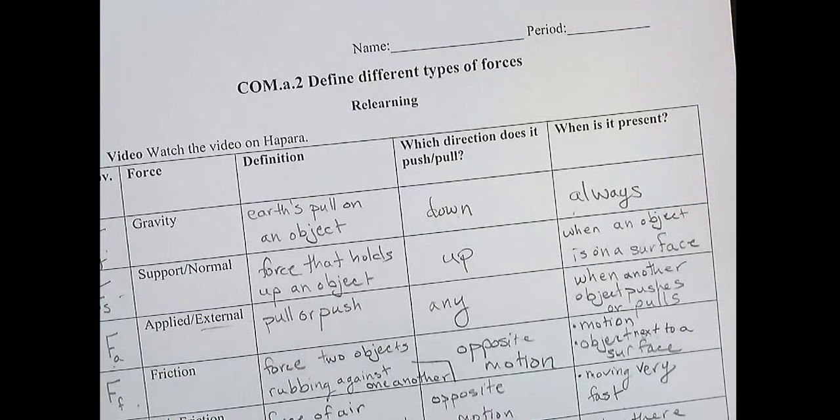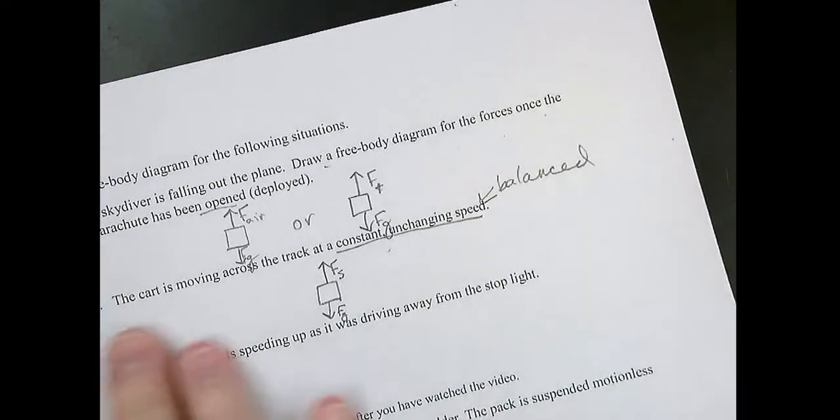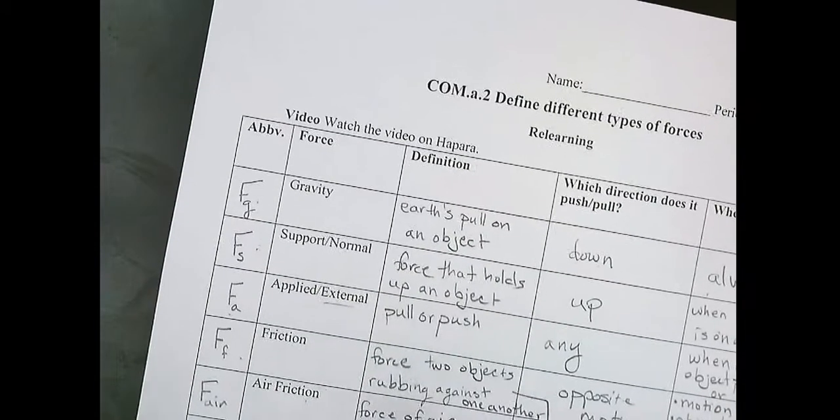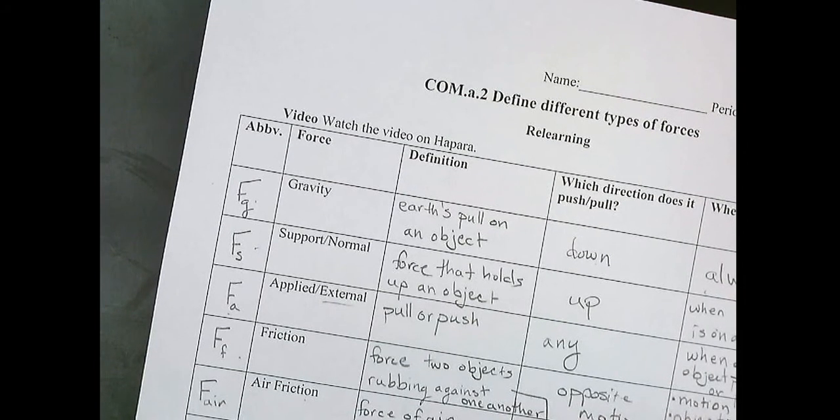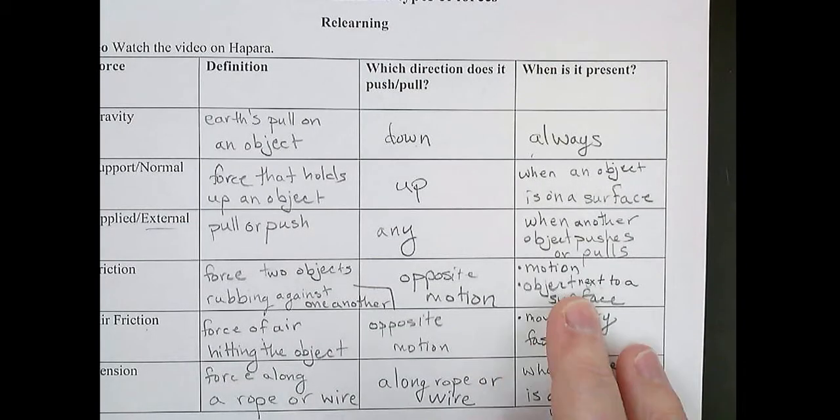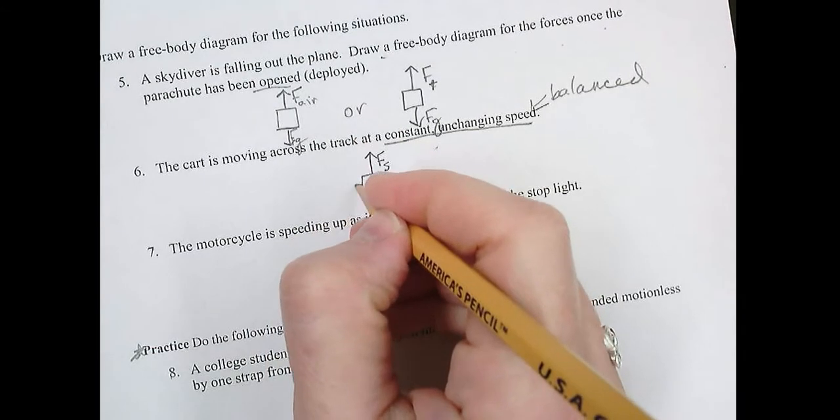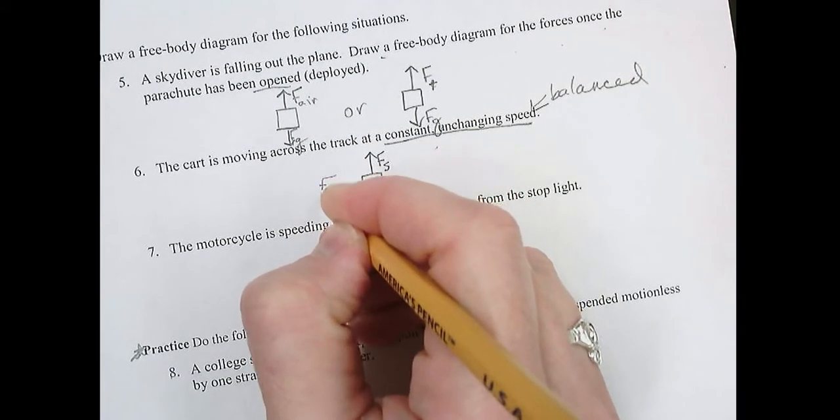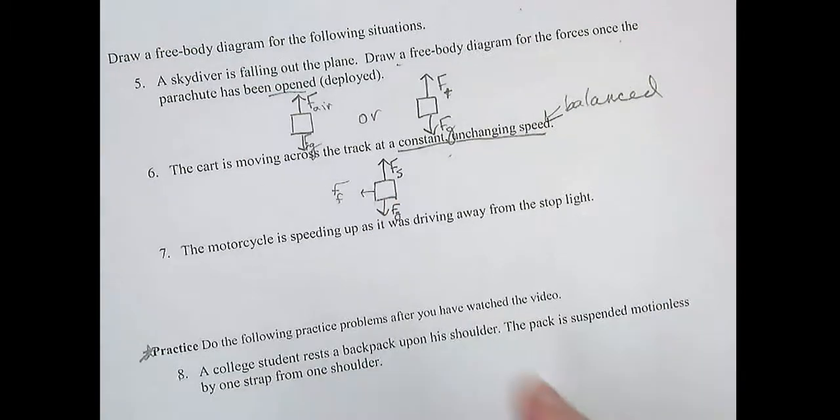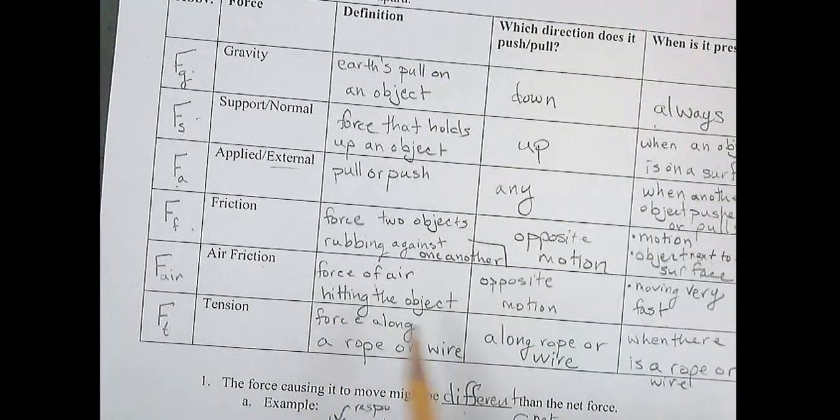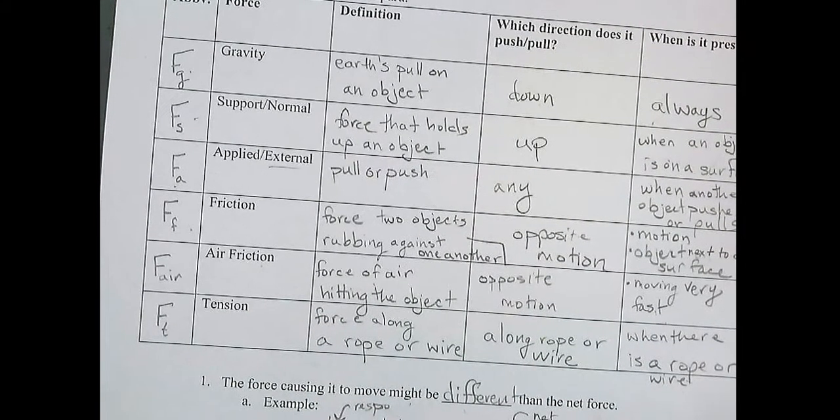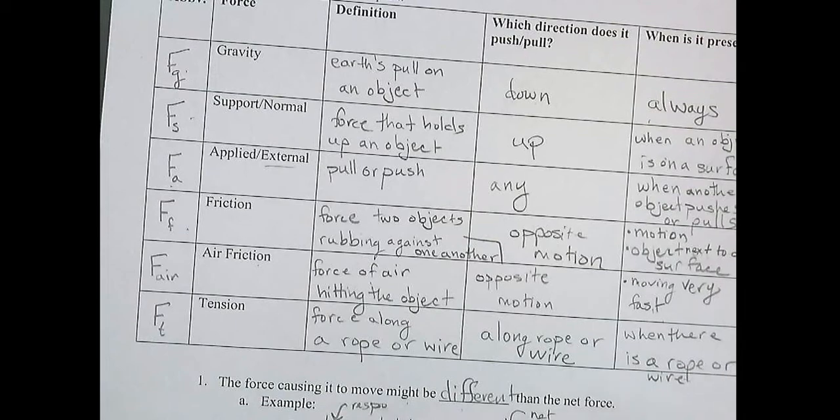There is support force when the object is on a surface. So the cart is on the track, so we're going to write there's support force. Is something pushing or pulling the cart? It doesn't say, so we're going to leave it off. Is there friction? There is motion, and the object is next to surface. So there has to be some friction. Is there air friction? Is it moving very fast? It doesn't say it's moving very fast, so we're going to ignore that. Is there tension? There is no rope or wire.